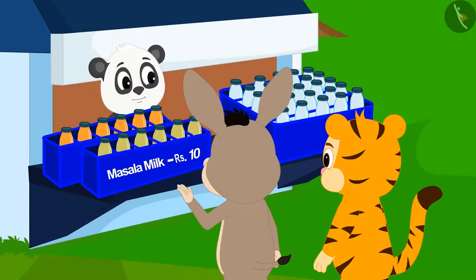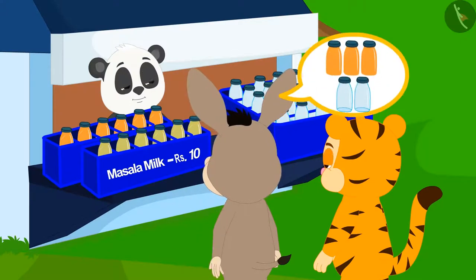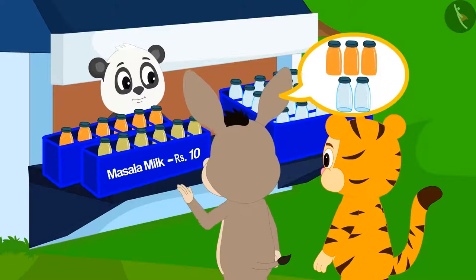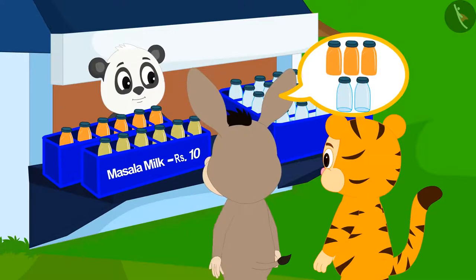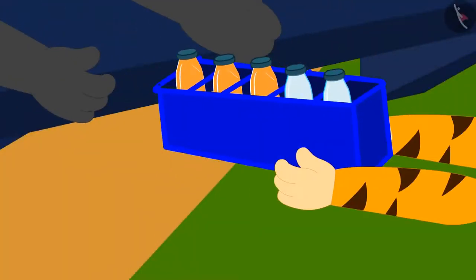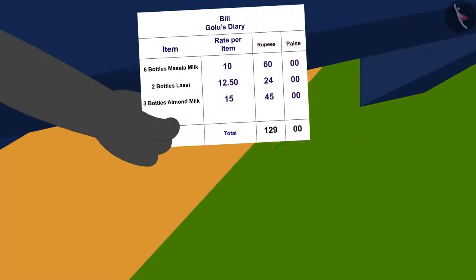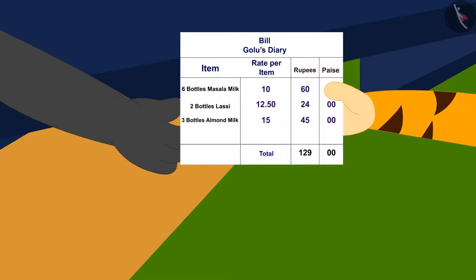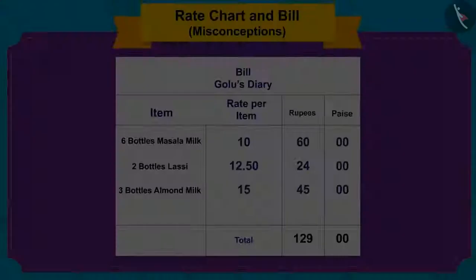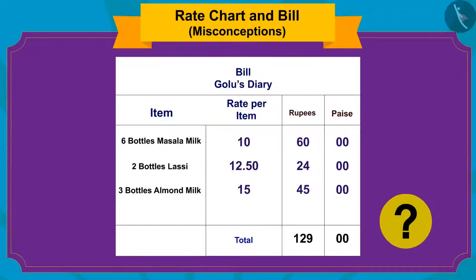Now, Bholla and Sher Khan want to carry two bottles of lassi and three bottles of almond milk for their friends. Golu gave him all the bottles and also made a bill at the same time. Children, can you look at this bill and tell if Golu has made it correctly?